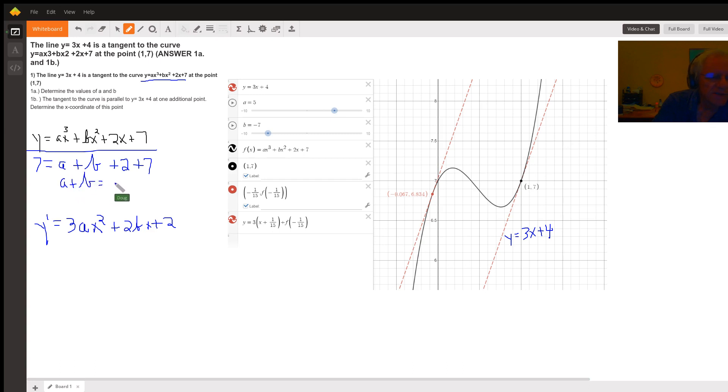Now down here, this formula for the derivative, that's again the formula for slopes of tangent lines to the original, the graph of the original function. This information right here, y equals 3x plus 4, tells us that the slope of the tangent line is 3.